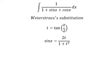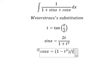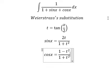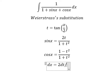And the next one, we have cosine x, we change by 1 minus t squared over 1 plus t squared. And the next one, dx, we change by 2 dt over 1 plus t squared.